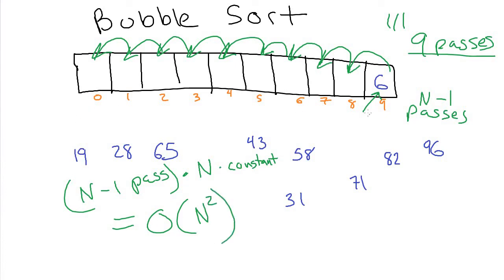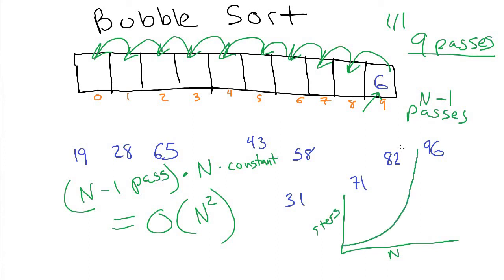Each pass takes O(n) work and we do O(n) many passes, so bubble sort is an O(n²) algorithm. As the size of our array increases, the number of steps increases quadratically — following a parabola-like curve. Now we'll turn our attention to the merge sort algorithm, which is quite different.